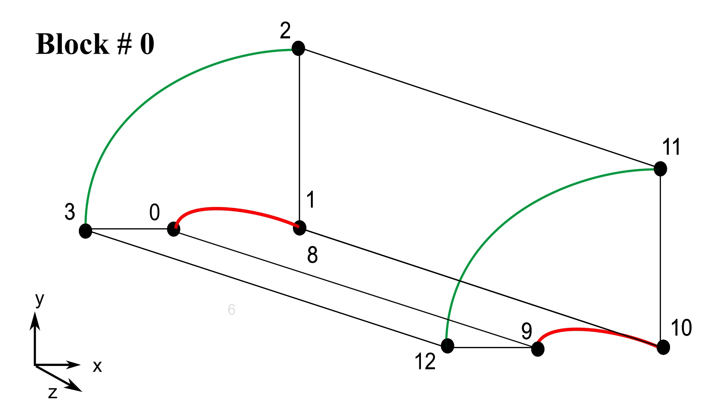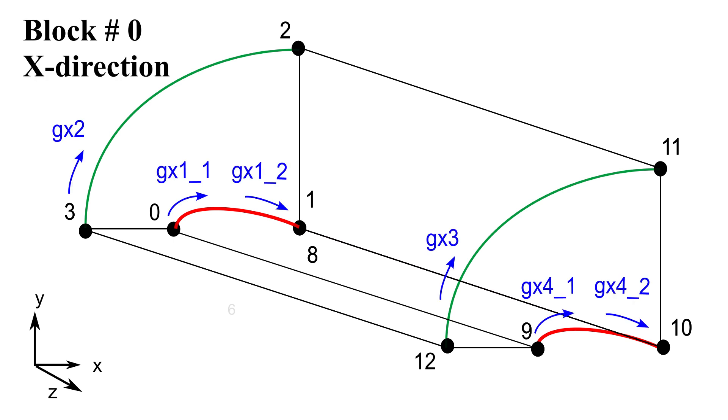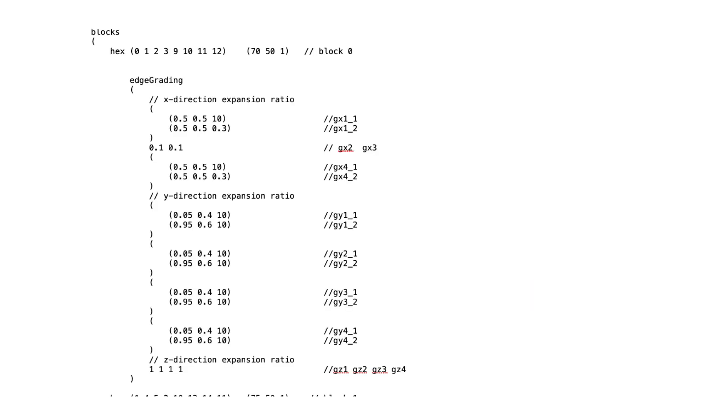By controlling the cell distribution along these edges, we can refine the mesh near the airfoil surface and maintain a smooth transition toward the inlet region. For the X edges in this block, we used the edge grading to split X1 and X4 into two parts, each with reverse bias directions. This approach refines the mesh near both the leading edge and the trailing edge of the airfoil, where the flow gradients are strongest. For the X2 and X3 edges, we applied 0.3 grading value to help reduce cell skewness and maintain a more uniform transition toward the inlet boundary. And here is how to implement the X edges cell distribution directly in the BlockMeshDict file.